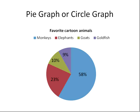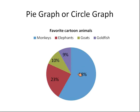The final type of graph is a pie graph or a circle graph. I made up these numbers — favorite cartoon animals. A poll of 6,000 people: 58% like monkeys, 23% like elephants, 10% like goats, and 9% like goldfish. Pie graphs or circle graphs show us the part of a whole. You'll usually see it in percentages because the whole circle represents 100%, though sometimes you'll see actual data numbers instead.